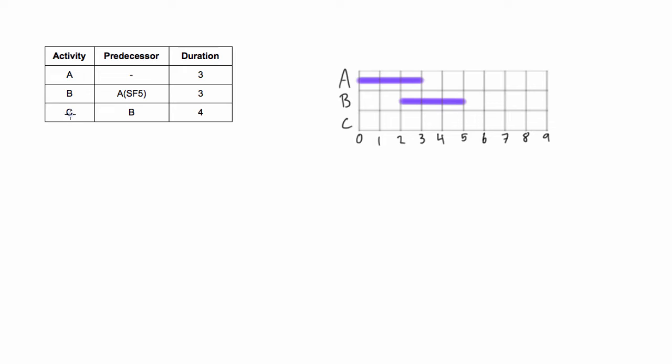Now the next one we have, this is just activity C depends on B. It's just a regular finish to start relationship. Again, if there's no letters here you just know it's just a regular finish to start relationship, so C can start as soon as B is done and it's a duration of four. So we're gonna go from five, one, two, three, four, up until the end of day nine and that will finish off our project for us.